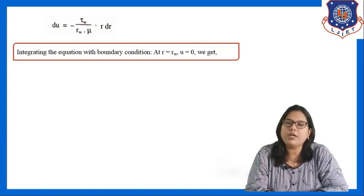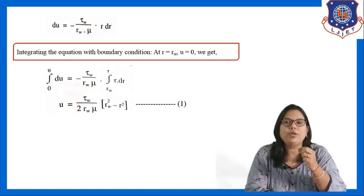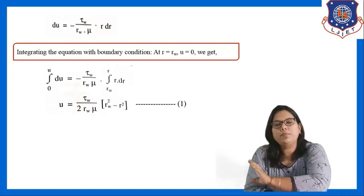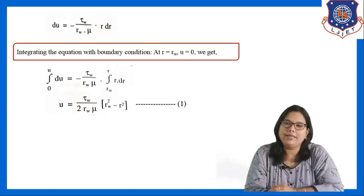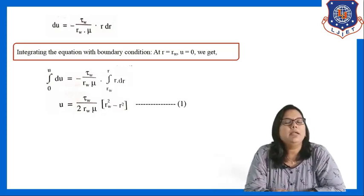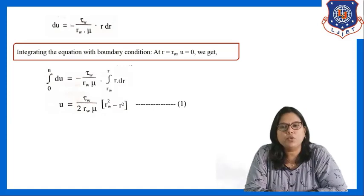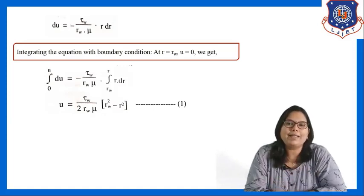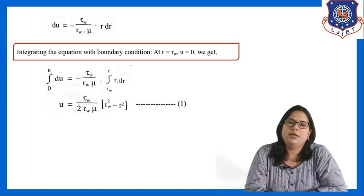Performing the integration from 0 to u for du on the left, and from r_w to r for r dr on the right with constant minus tau_w upon r_w·mu outside, and integrating r dr as r²/2 and applying limits, we get equation 1: u = (tau_w / 2·r_w·mu) × (r_w² − r²).